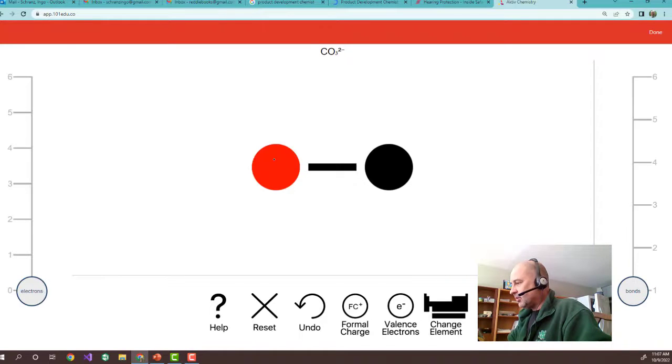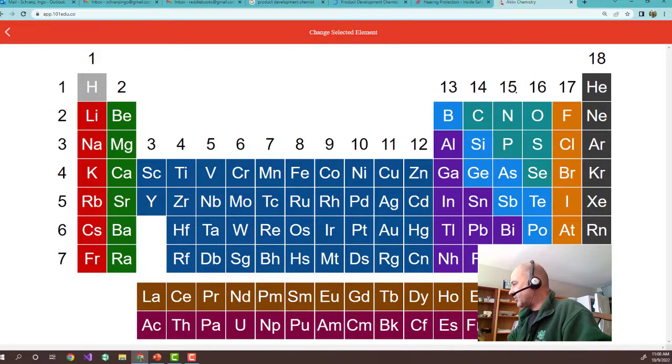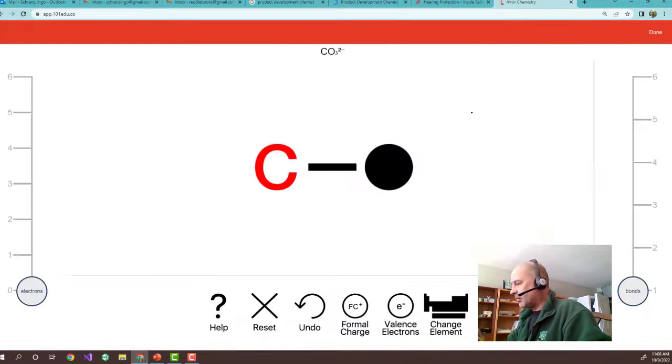And so, it's up to you. You can make this carbon. You just click on the periodic table. You can select any atom you want. So, you make this carbon.